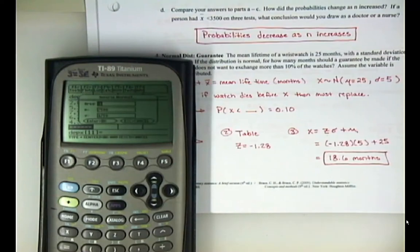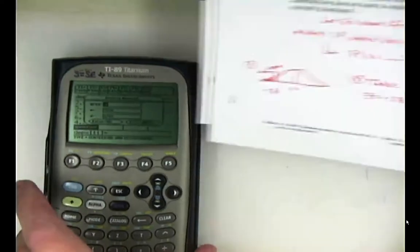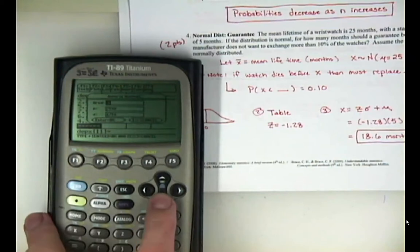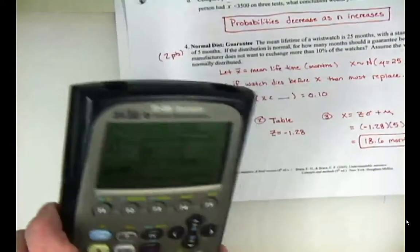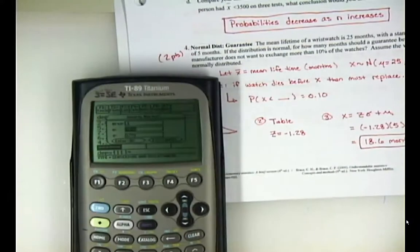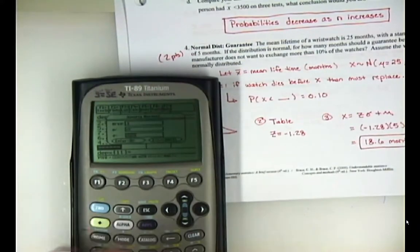So if we select the inverse normal, it says what's your area? Well, the area that we would have shaded is 10%, so I put in the area is 10%. X bar, it wants to know, I'm sorry, it wants to know mu, or the mean that's given to you, and this problem is 25, and the standard deviation that is given to us is 5. And then you hit enter,